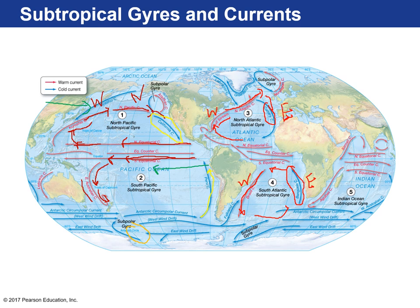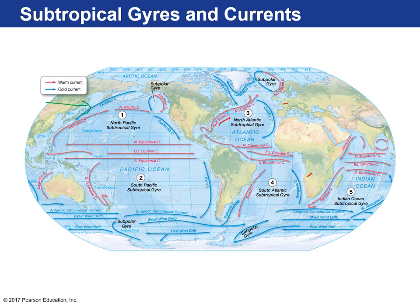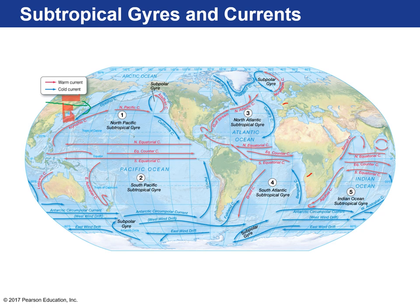Those are the subtropical gyres and their currents. Note that western boundary currents are typically found on the eastern side of continents — which can be confusing. When we talk about eastern and western boundary currents, we're referring to the ocean basin. This is the western side of the Pacific Ocean basin and the eastern side. When we talk about continents, this is the western side of the American continent and the eastern side of the Asian continent.